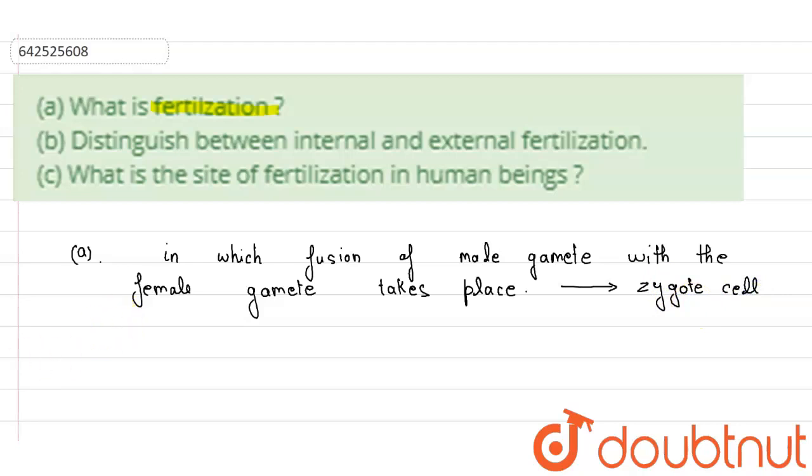Okay, now let us look at the B part of the same question. The B part asks us to distinguish between internal and external fertilization. So how can we distinguish the same? We have to differentiate between external fertilization and internal fertilization.